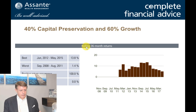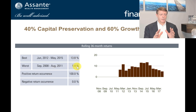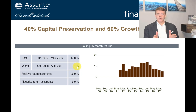Now looking at a rolling 36-month period — if you look at that time frame, the best three-year period was 13.8% on a compound annualized basis, and the worst was 1.4%. So over that worst three-year period, it wasn't great returns, certainly not what the investor was expecting as a long-term performance goal. But over three years, they're now back in positive territory. And if you look at every 36-month period, there were no losing 36-month periods — some very mediocre years, but no losing period in that cycle.